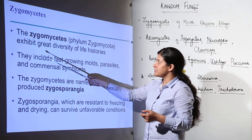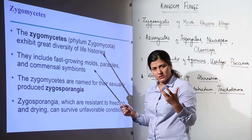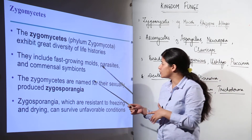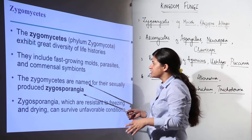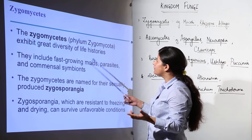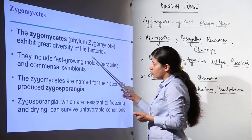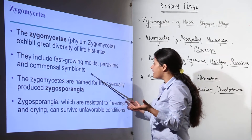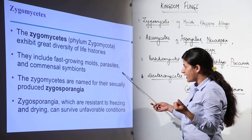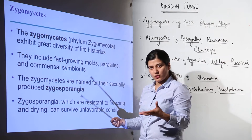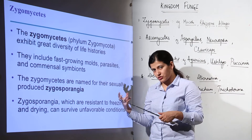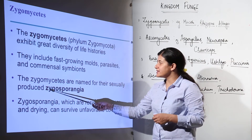Zygomycetes exhibit great diversity of life histories because some show alternation of generations at one stage while others show differently. There are so many species in Zygomycetes — earlier even the slime molds were included in this classification, so it is quite a diverse phylum. They include fast-growing molds like Rhizopus. They can be parasitic, as in the case of certain plant parasites, and commensal symbionts that benefit the plants or autotrophic entities they feed on.